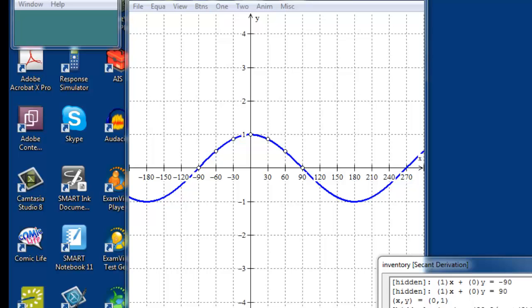Now let's look at the graph of the secant of x. The secant of x is the reciprocal of the cosine of x.